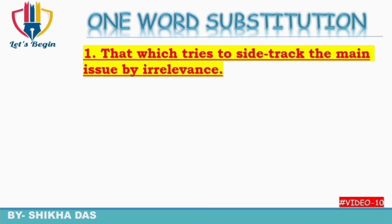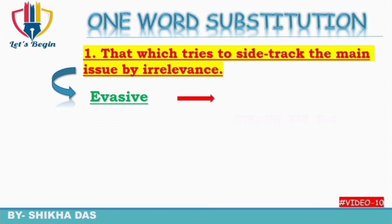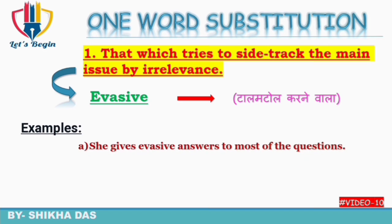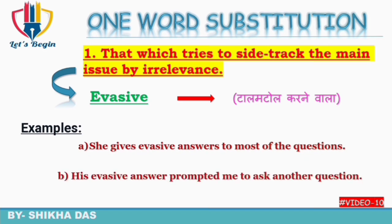First question: that which tries to side-track the main issue by irrelevance — matlab ki faaltu bakwas karke main mudde se concentration hatana. Isko one word mein kaha jata hai 'evasive'. Evasive ko Hindi mein kehte hain 'talmatol karne wala'. Like: 'She gives evasive answers to most of the questions.' 'His evasive answer prompted me to ask another question.'